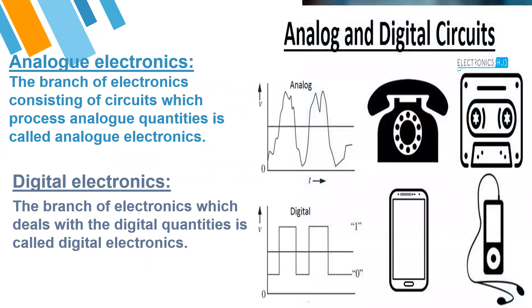Look at the circuit of analog and digital electronics. The waveform of analog is continuous and not uniform. The telephone and cassette recorder are examples of analog circuits. This is the waveform for digital electronics.